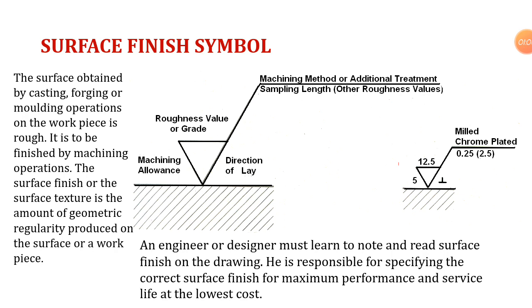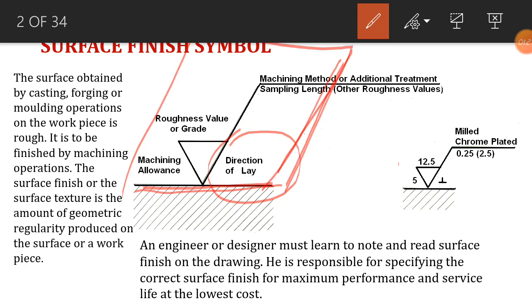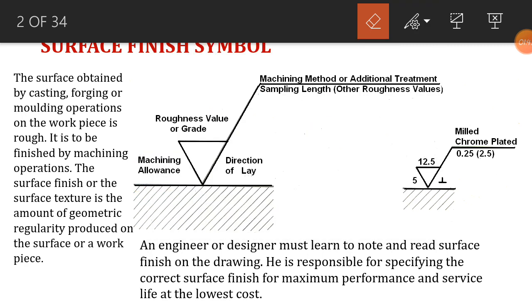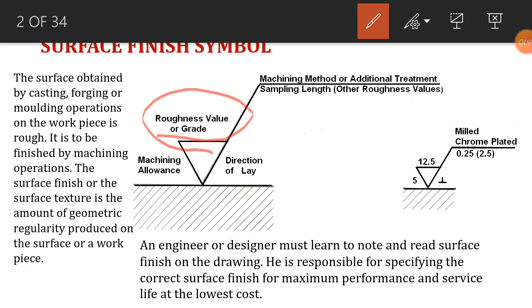You can see here that a triangle is shown, and there is a direction of lay, which means the surface has different directions. We can use the direction for the machining process. You can see the surface value or grade, which shows that we have to provide a surface roughness value or grade — which means it provides a tolerance.